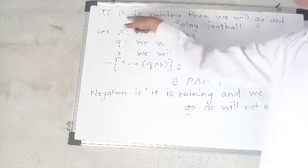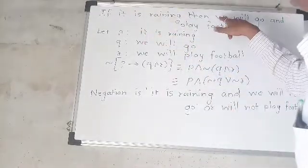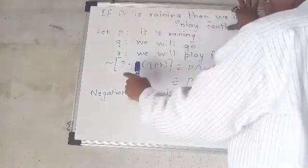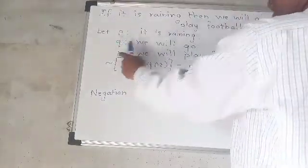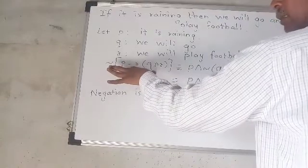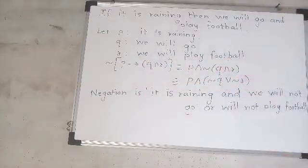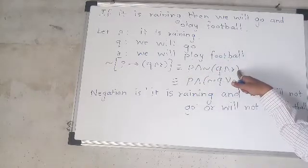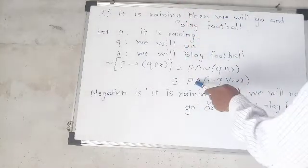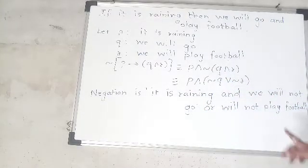To check: if it is raining then we will go and play football — there are three components: it is raining (P), we will go (Q), and we will play football (R). The negation is: it is raining, and we will not go or we will not play football.